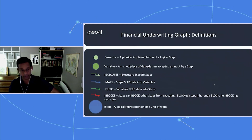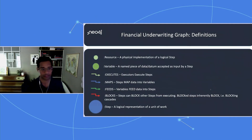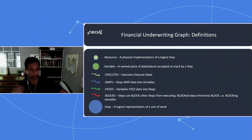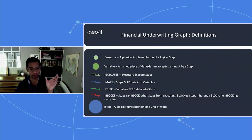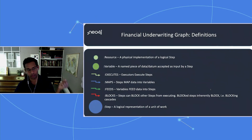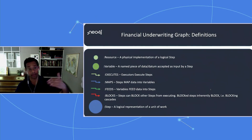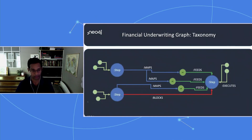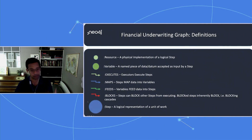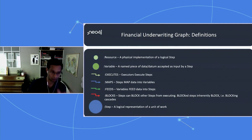Here are the definitions. Everything is a step — all the blue nodes representing logical actions are steps. Steps have data coming out of them, which gets mapped into variables that feed other steps. Steps are executed by resources, which are the physical implementation of the logical action. Steps can also be blocked by other steps. And blocking is inherently cascading — if a step is blocked and that blocks relationship fails, downstream steps also won't be executed.